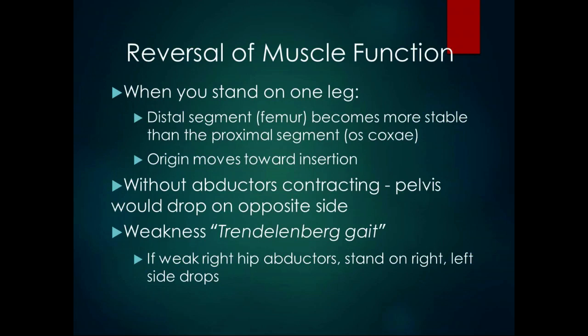Reversal of muscle function occurs when the origin moves towards the insertion, as opposed to normal function where the insertion moves toward the origin. This happens a lot in closed chain because the more distal end of the muscle is fixed. When you stand on one leg, the distal segment of the hip abductors — the femur — becomes more stable, and the proximal segment, the pelvis, is less stable. So the origin moves towards the insertion: the top of the pelvis along the iliac crest moves towards the greater trochanter. Without the hip abductors contracting for that reversal of muscle function, the pelvis drops on the opposite side — this is called Trendelenburg gait or Trendelenburg sign.